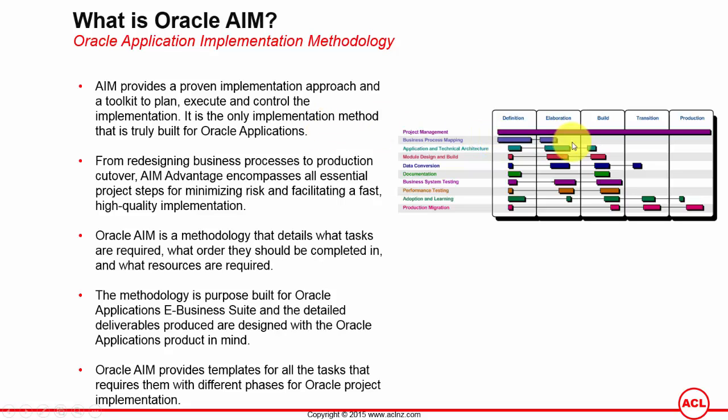On the right-hand side I have depicted a picture from the AIM method itself, which details the phases of the project and the processes listed on the left-hand side. Each of these phases will contain a number of processes. For example, the definition phase starts with project management, wherein the project manager builds a project plan and identifies team members to work with the client to start the implementation process, which could include talking to clients to understand their requirements and working out an Oracle solution, presenting it in the form of conference room pilots.